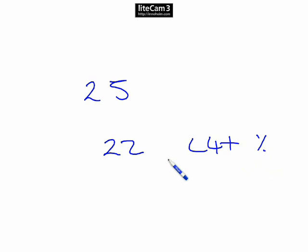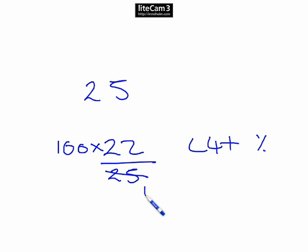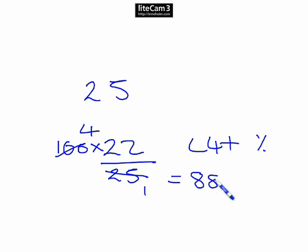Simple percentage calculation. 22 out of 25 achieved level 4 and above, so we take 100 times 22 over 25. We can cancel: 25 goes into 100 four times, so 4 times 22 is 88. Our answer is 88%.